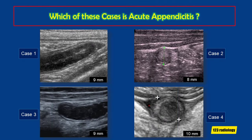These are four cases of suspected acute appendicitis. On the upper right image, the appendix measures about 9 mm in diameter with a very thick hypoechoic wall. On the upper left image, the appendix is distended at about 8 mm, with normal wall thickness and echogenic material within its lumen. The third case shows the appendix at 9 mm with normal wall thickness and a fluid-filled lumen. The fourth case shows the appendix at 10 mm with normal wall and its lumen filled with echogenic material. Which of these is actually acute appendicitis?